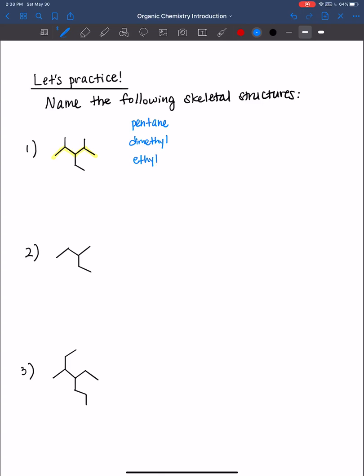All right. Now we have to number it so that the branches or the substituents get the lowest number. In this case, this is a symmetrical molecule. So you can number from left to right or right to left. One, two, three, four, five. So we have a two, four, hyphen, dimethyl, and a three, hyphen, ethyl. Remember to separate numbers and letters, use hyphens. If you have numbers in a row and you separate those numbers by commas.